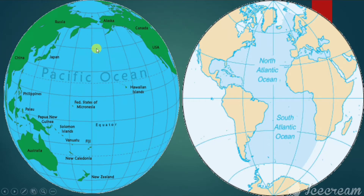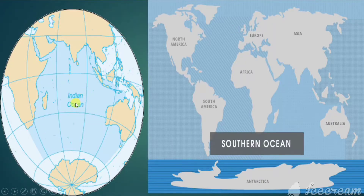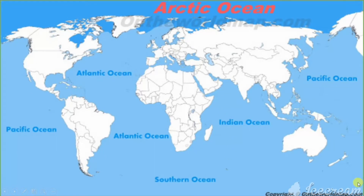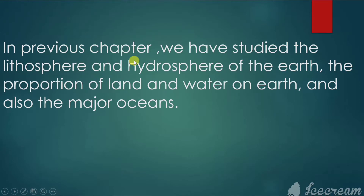The oceans include the Pacific Ocean, the Atlantic Ocean, the Indian Ocean, the Southern Ocean, and the Arctic Ocean, each covered in area of square kilometers. In the previous chapter we studied the lithosphere and hydrosphere of the earth, the proportion of land and water on earth, and also the major oceans.